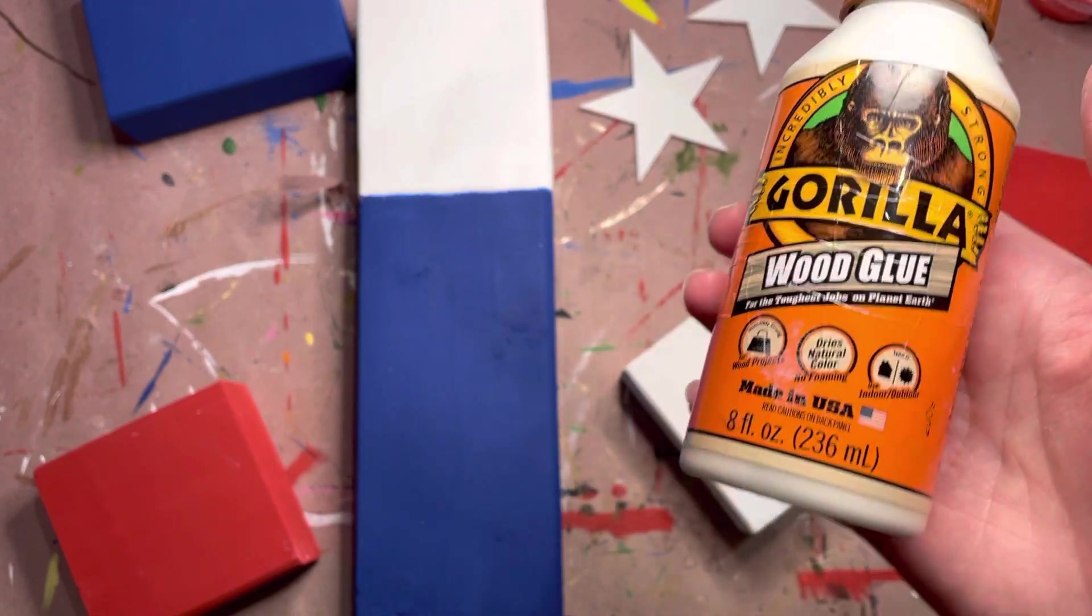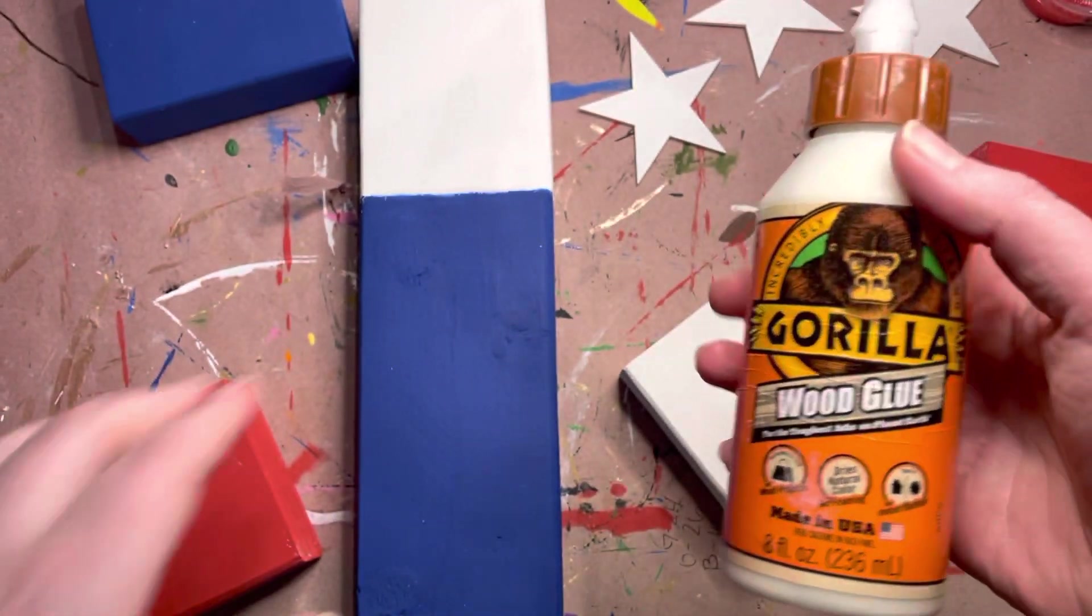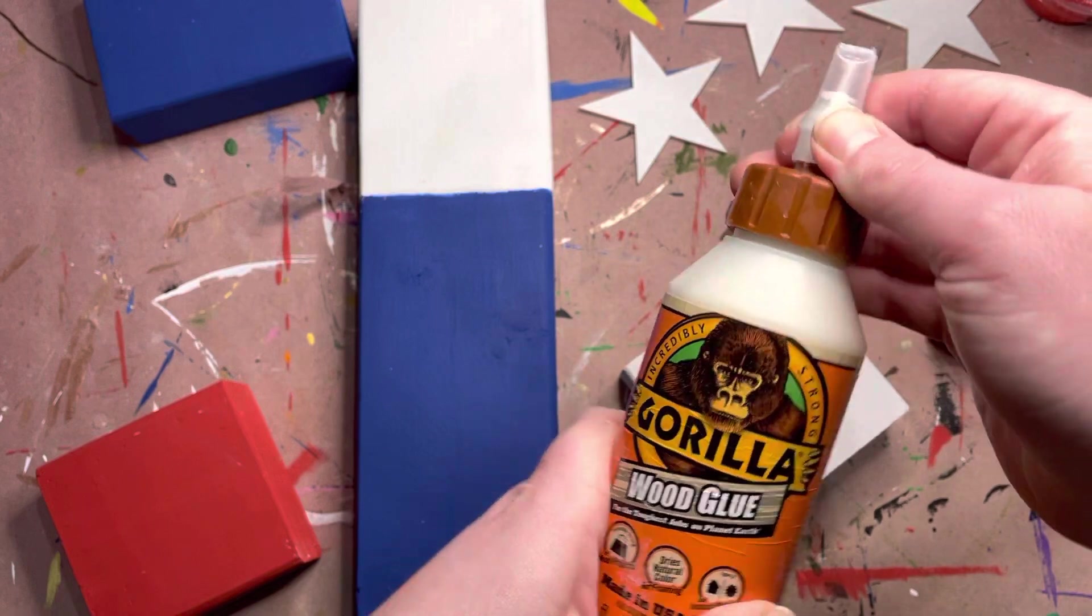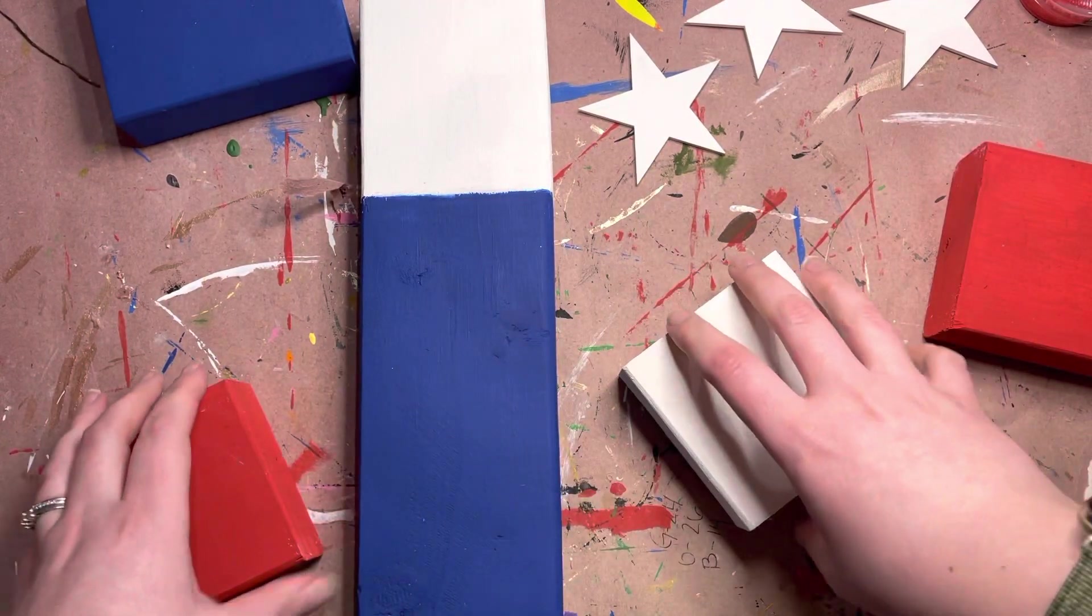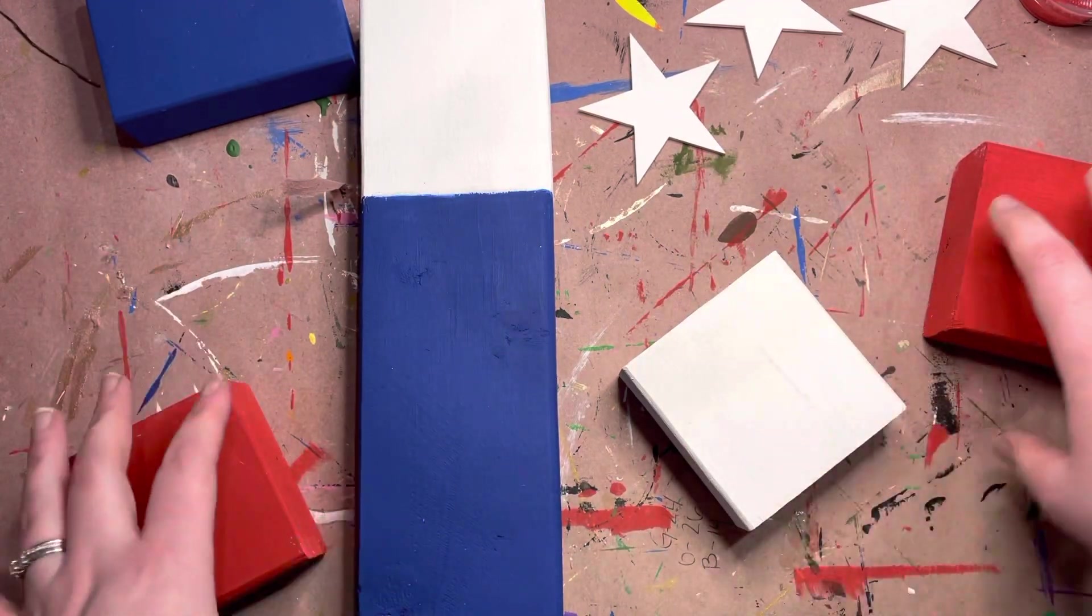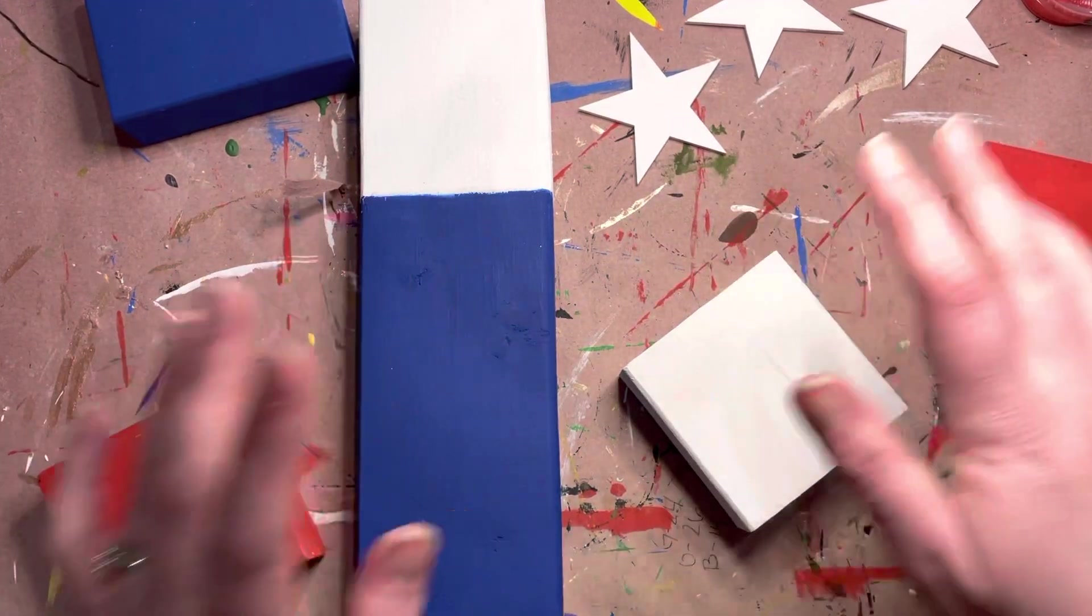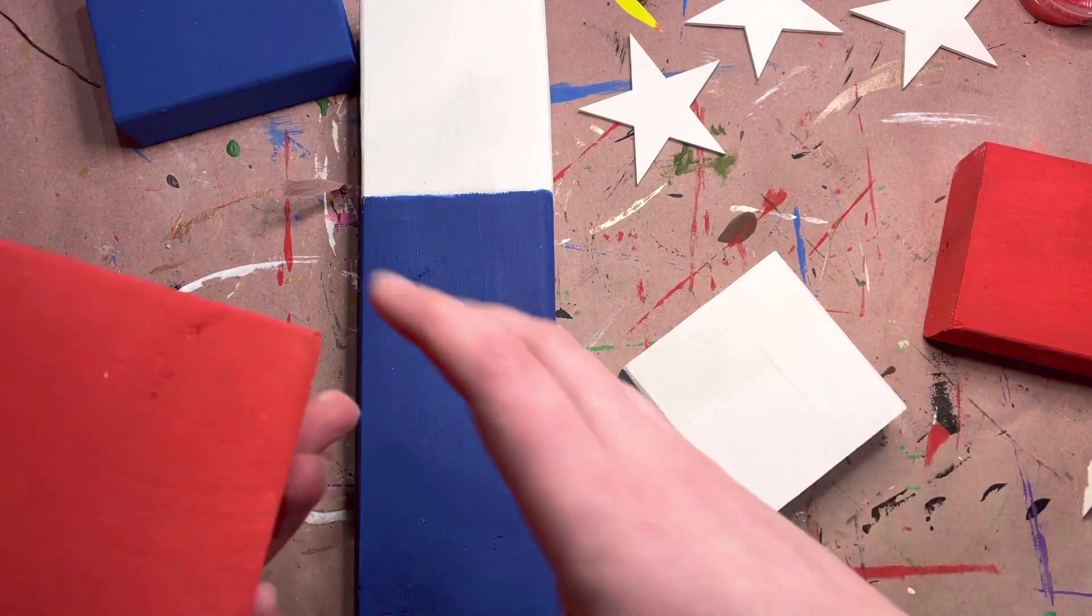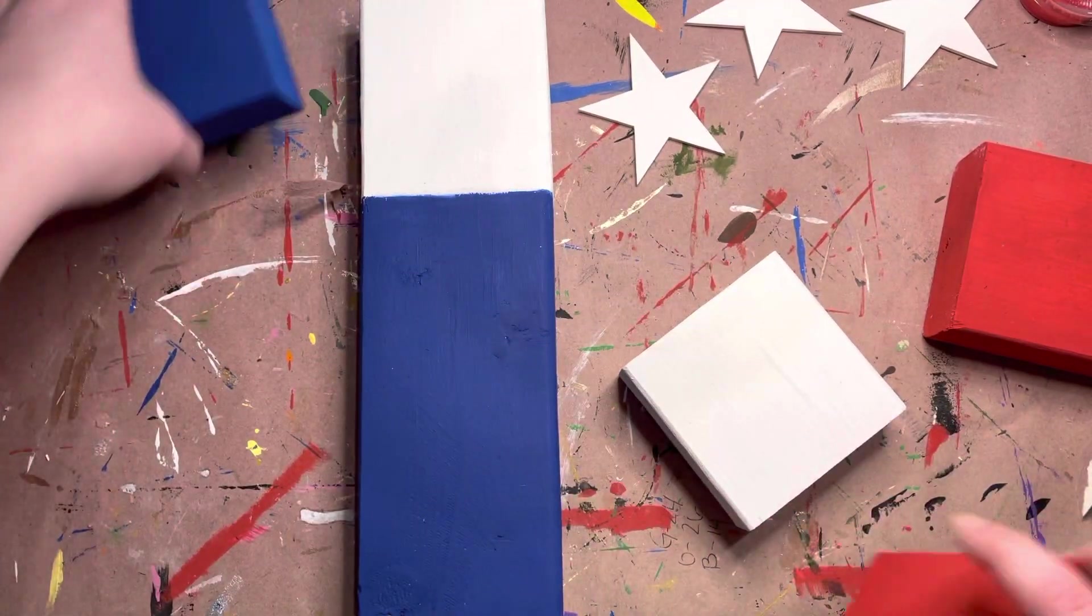I always use Gorilla wood glue but it doesn't matter what. Just grab some because you are going to want to use that to hold your pieces together. I just say wood glue because that's what it's made for. And since this is going to be hanging up and your pieces need to stay connected, that's really what I would suggest that you be using.